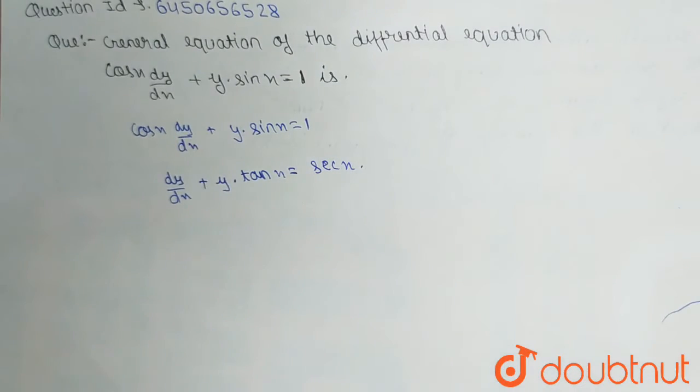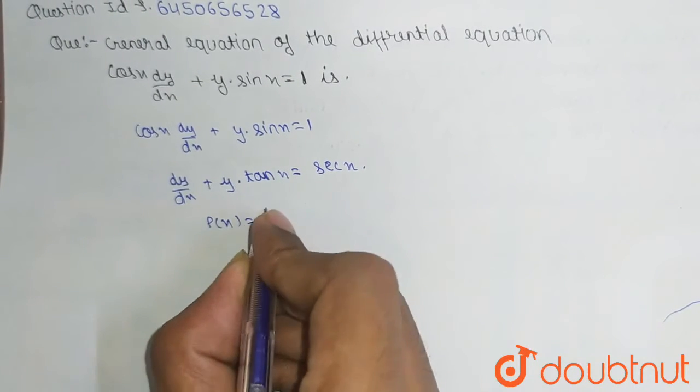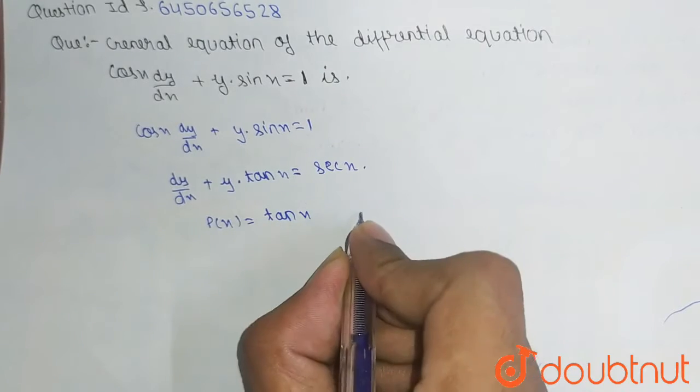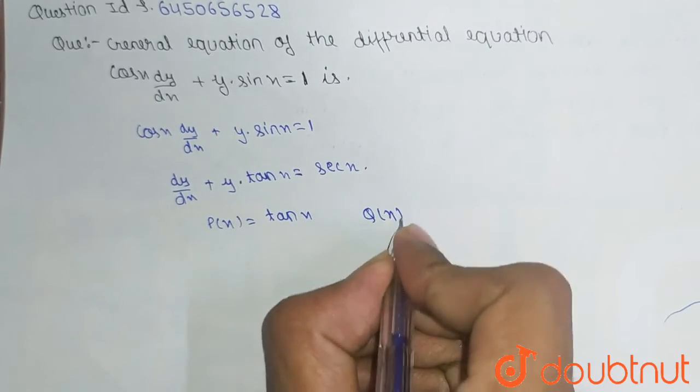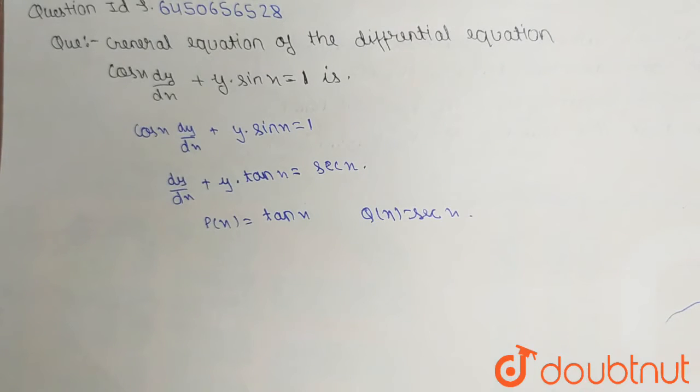As we see, this is in linear form and we have clearly seen that here P(x) is equal to tan x, and our Q(x) is equal to sec x. Now what we have to find is the integrating factor.